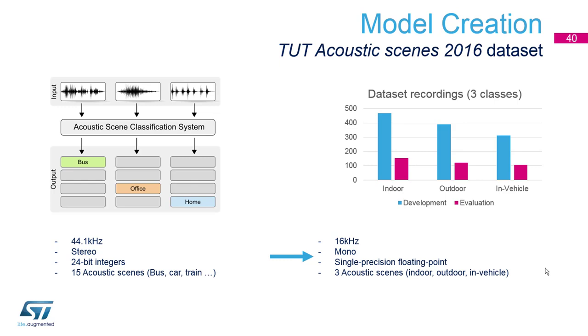It had 15 different classes. For our example we narrowed it down to only three classes, so classes such as bus, car and train were all merged into one class called in vehicle. The signal was down sampled from 44 kilohertz to 16 kilohertz. This is the sampling frequency that we'll be using with our microphones and from stereo to mono.